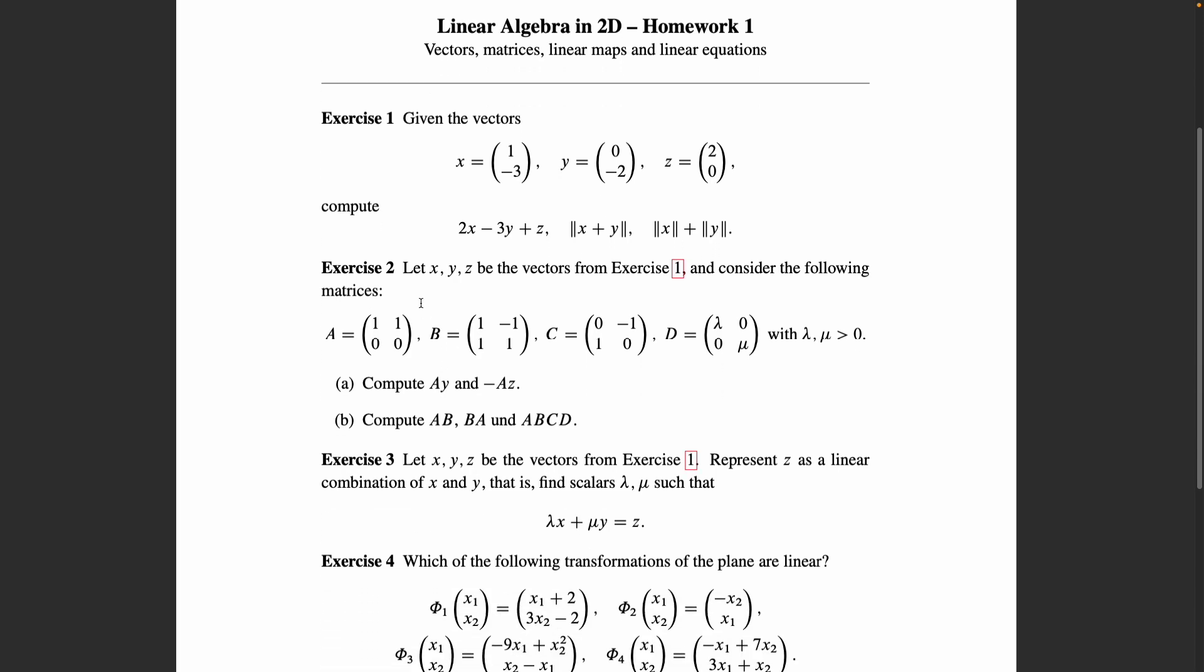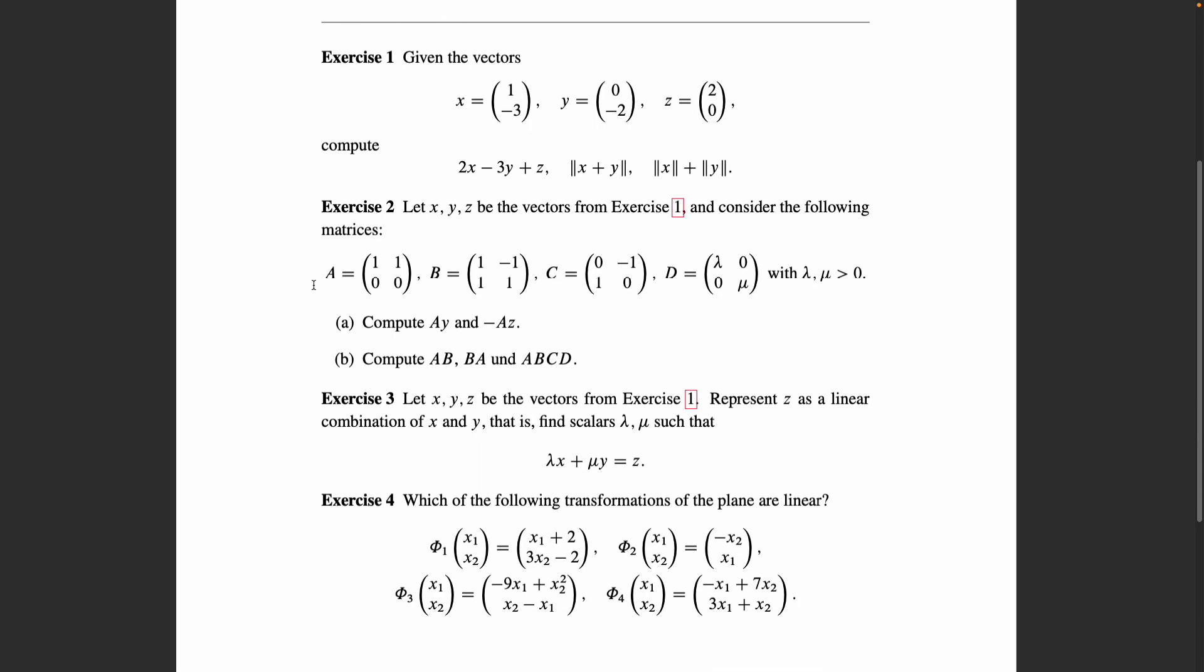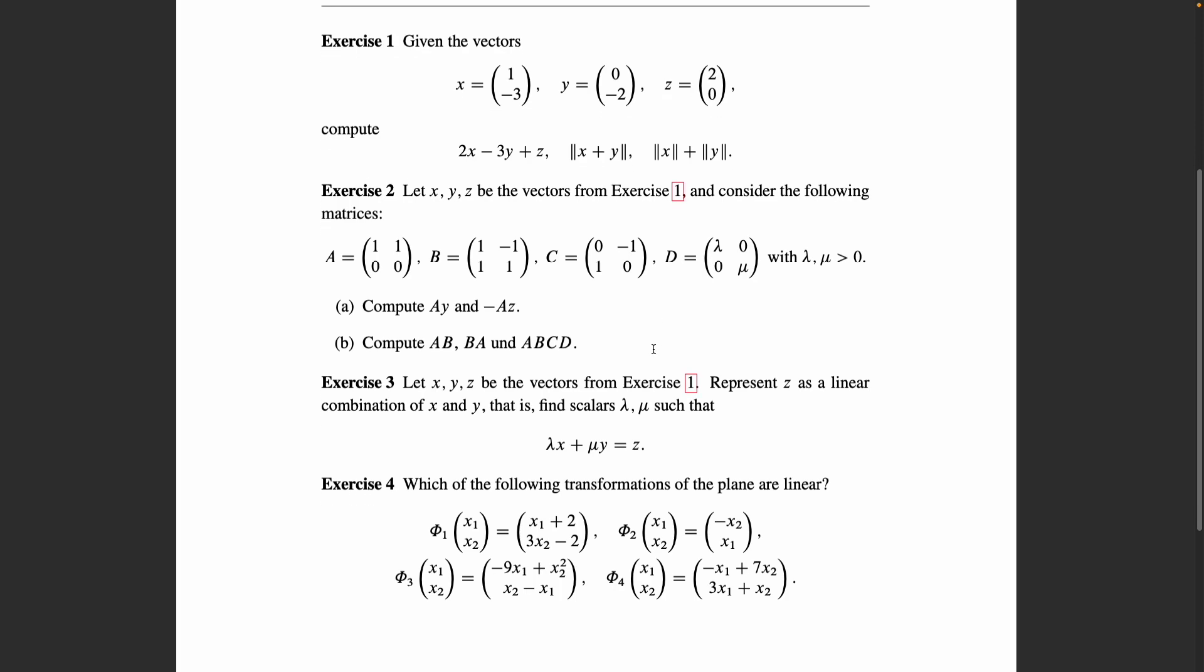Now we keep those three vectors from exercise one and introduce a few matrices a, b, c and d and just play around with the matrix vector product a little bit. Compute a times y and minus a times z, and also compute the matrix product a times b, compare this with the matrix product b times a, and compute the product of all four matrices a, b, c, d.